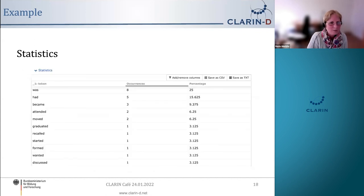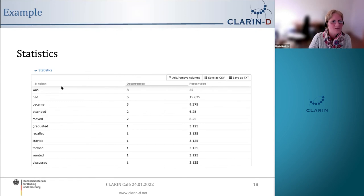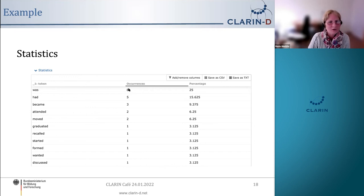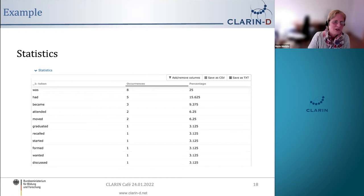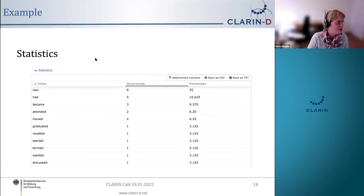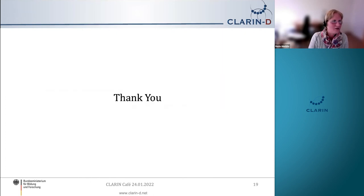Finally, we can also gather statistics about the search results. This was a very simple search just looking for verbs, but here I can see that there were eight occurrences of 'was' and five of 'had'. More intricate searches are also possible. That was all I wanted to say — thank you very much.